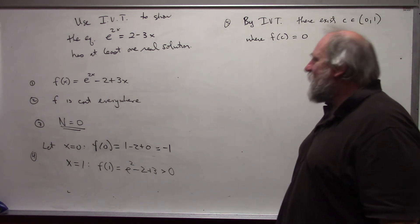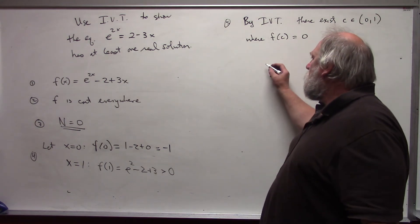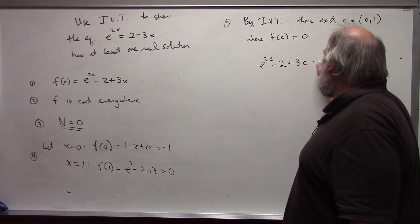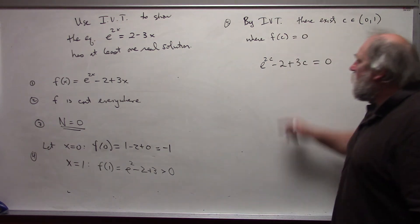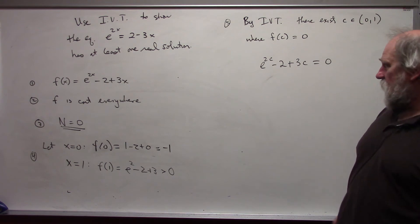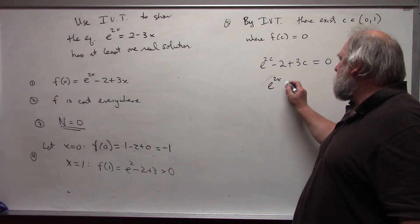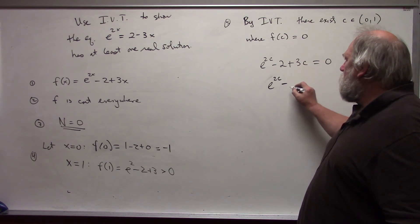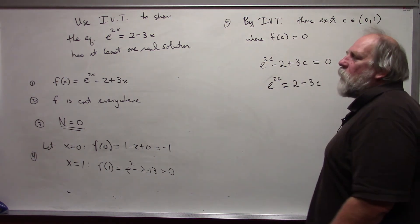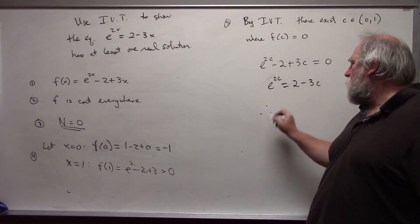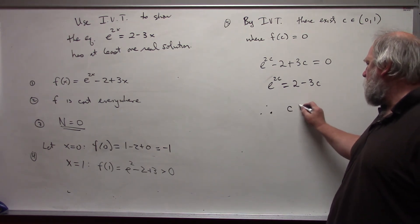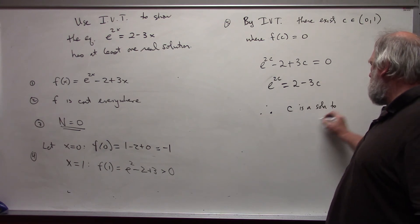So that means literally, e^(2c) - 2 + 3c = 0. I literally let x be c in my function. And now, this means then that e^(2c) = 2 - 3c, bringing it back in the form of my original equation. Therefore, and a triangle symbol of dots means therefore, c is a solution to the equation.